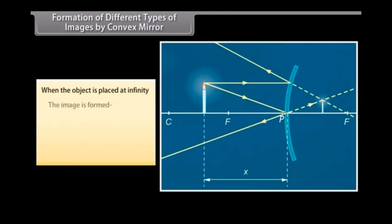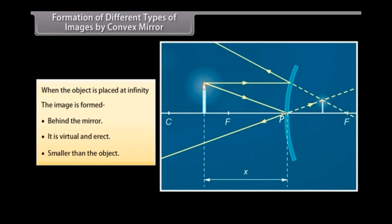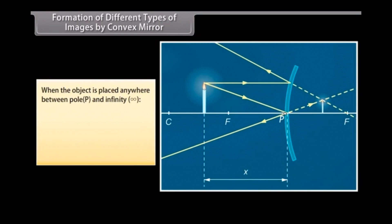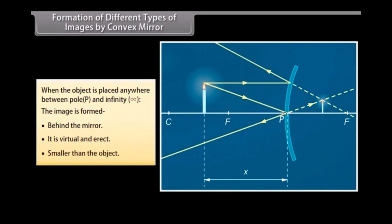Formation of images by a convex mirror: When the object is at infinity, the image is formed behind the mirror — virtual, erect, and smaller than the object. When the object is placed anywhere between the pole P and infinity, the image is also formed behind the mirror — virtual, erect, and smaller than the object.